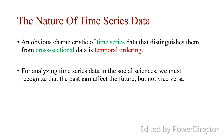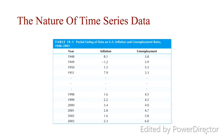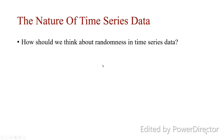For analyzing time series data in the social sciences, we must recognize that the past can affect the future, but not vice versa — the future cannot affect the past. As you can see here, this data shows year, inflation, and unemployment. At every year we have only one record of inflation and one record of unemployment for the US data. We cannot have two inflation values for one year — this is the key difference between cross-sectional and time series data.